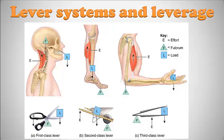In a second class lever, the load is between the fulcrum and the effort. An example is a wheelbarrow: effort is exerted on the handles, the load is in the wheelbarrow, and the fulcrum is the wheel. A body example is standing on your toes: the fulcrum is the ball of your foot, the load is your body weight through your ankle, and the muscle force comes from your calf and soleus muscle.